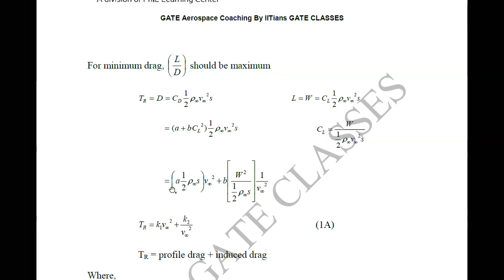Here, a is the parasite drag coefficient — it is fixed when you design your aircraft. Rho is also fixed when flying at the same altitude. Wing area S is also fixed for steady level flight when not using high-lift devices. b = 1/(π·e·AR), where efficiency factor e and aspect ratio AR are also fixed at the design stage. Weight is also a fixed quantity. So all these are constants — the only variable is velocity.